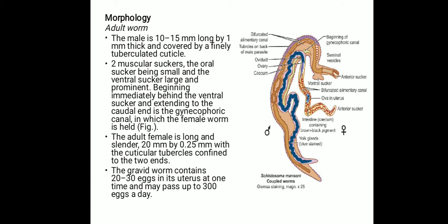The male is 10 to 15 mm long by 1 mm thick, covered by a finely tuberculated cuticle. It has two muscular suckers — the oral sucker being small and the ventral sucker large and prominent. Beginning immediately behind the ventral sucker and extending to the caudal end is the gynaecophoric canal, in which the female worm is held. The female is long and slender, 20 mm by 0.25 mm, with cuticular tubercles confined to the two ends.